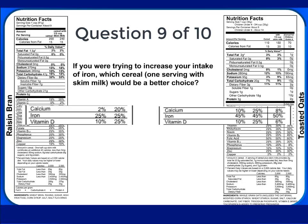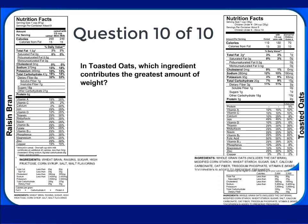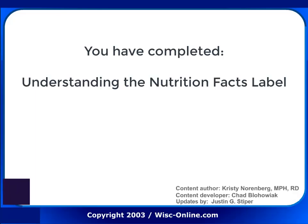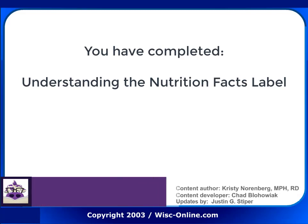If you were trying to increase your intake of iron, which cereal — one serving with skim milk — would be a better choice? Toasted oats has more iron. In toasted oats, which ingredient contributes the greatest amount of weight? The correct answer is Whole Grain Oats. Thank you for watching. You have completed Understanding the Nutrition Facts Label.